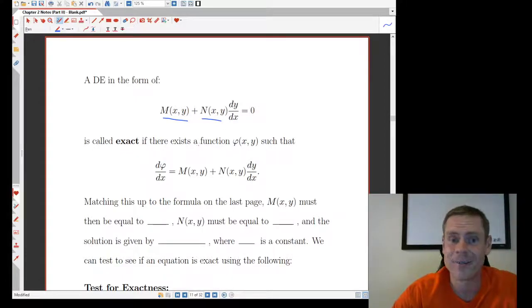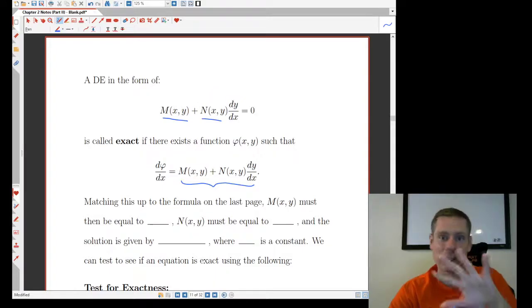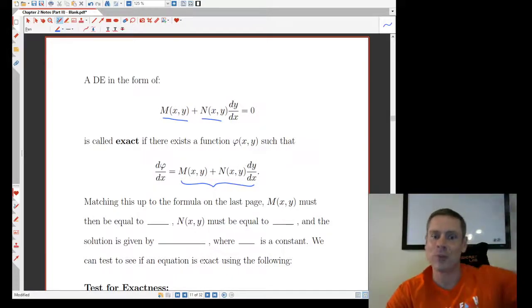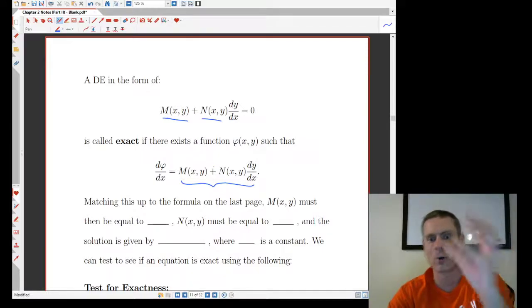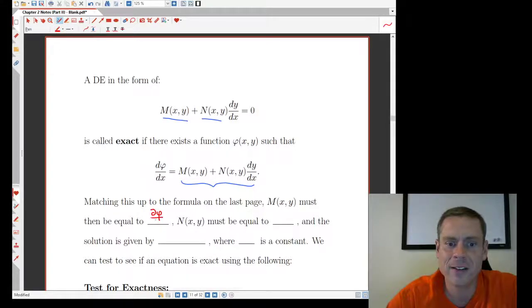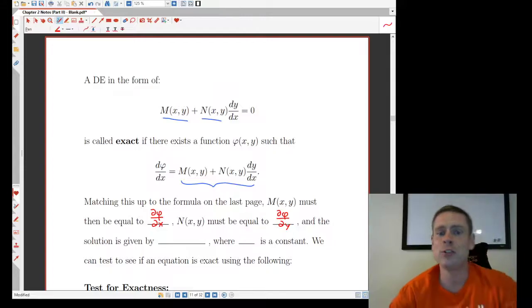This thing is called exact if there exists a function φ of x, y such that its total derivative with respect to x gives us the left-hand side. Okay? We still have to figure out under what conditions that's true and so on. But if that's true, then the left-hand side is going to look exactly like it did on the last page. And it's going to equal 0, which means that if I match those pieces up and I see what pieces kind of are corresponding to the dy/dx and so on, that M must be equal to ∂φ/∂x. The N must be equal to ∂φ/∂y. And the solution, if we step backwards to where we started originally, that was φ of x, y equals C. Where the C is any constant.